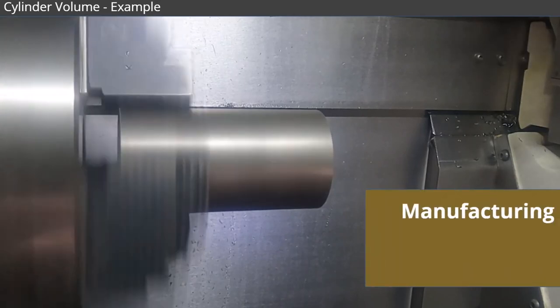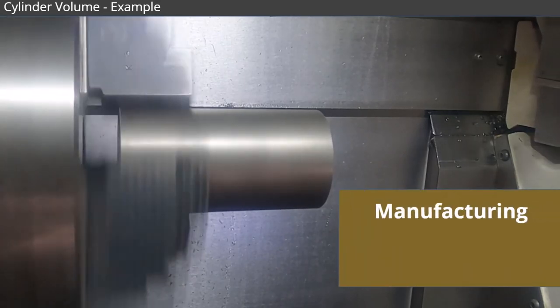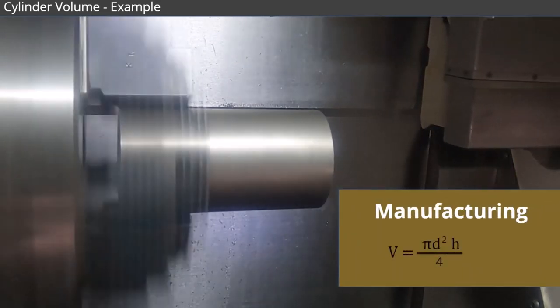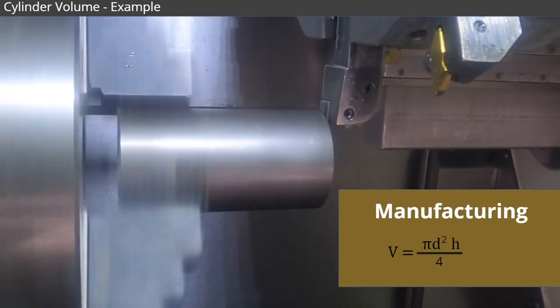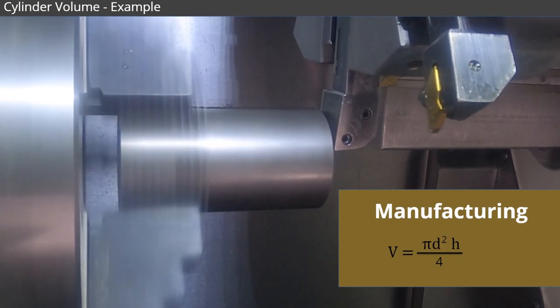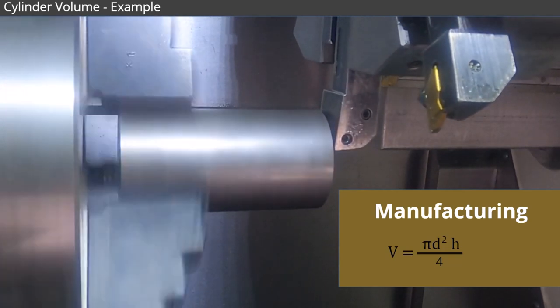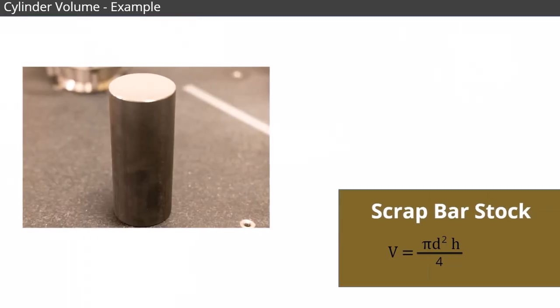Now, let's see how this applies to manufacturing. Knowing the formula for the volume of a cylinder helps when you need to design a cylindrical object. The dimensions usually require a very high precision to ensure the part functions properly. In order to eliminate waste, machinists often use scrap bar stock to calculate volume measurements. Let's work through the dimension measurements and volume calculations for this piece of scrap bar stock.